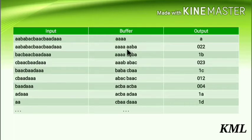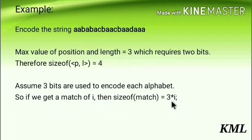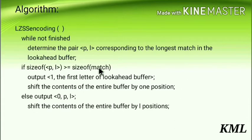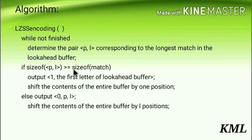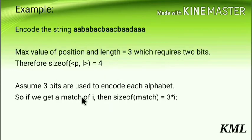Now start the matching process to find the longest common subsequence. Start from the leftmost position of the look-ahead buffer. You have AA in the look-ahead and AA in the dictionary — the longest match is AA, two characters. Multiply 2 by 3 to get size of match = 6. Check the condition: size of P,L is 4; is 4 >= 6? No, so go to the else part and output a 0 followed by position and length.